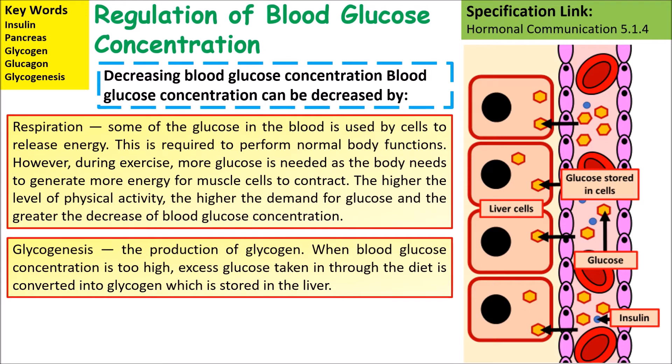Glycogenesis: the production of glycogen. When blood glucose concentration is too high, excess glucose is taken in through the walls of the liver and is stored as glycogen.